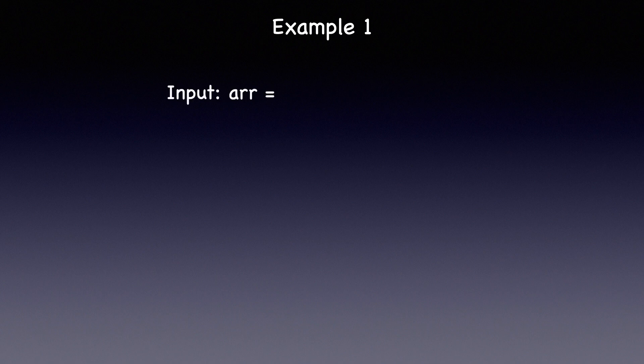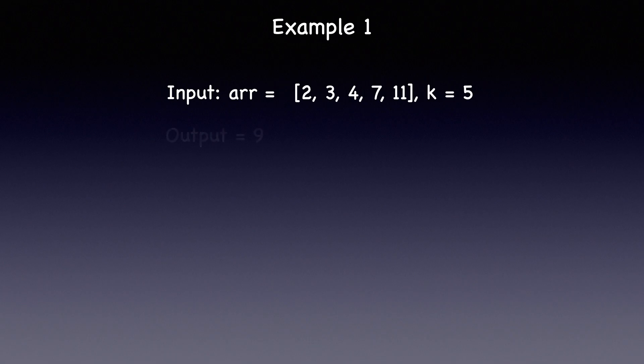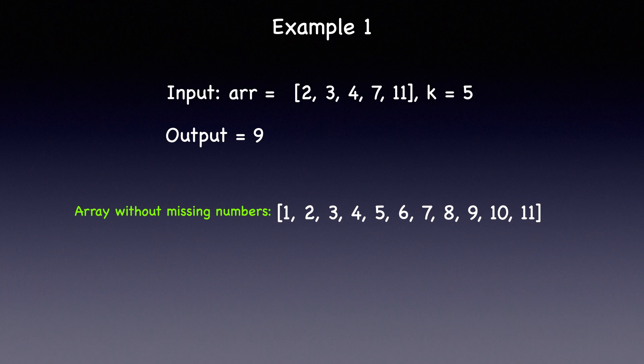Let's start by examining the initial example presented in the question. During our analysis, we'll focus on the O(n) approach for each example. The input array contains the elements 2, 3, 4, 7 and 11 with k equal to 5. The expected output for this example is 9. So how do they arrive at this result?